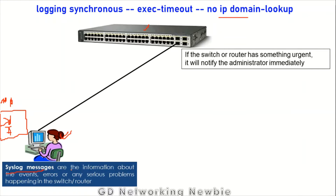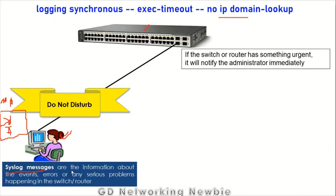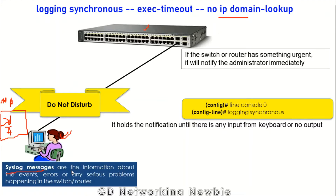On one hand syslog messages are useful, but sometimes they distract us while we are typing commands. We want a way to tell the switch not to disturb us. Cisco has provided a way to do that. If you are connected via the console port and don't want those messages displayed during your interaction, you go to the console port configuration and issue the command: logging synchronous.